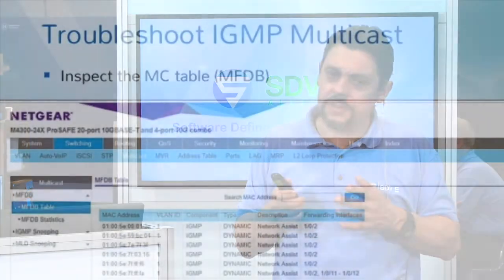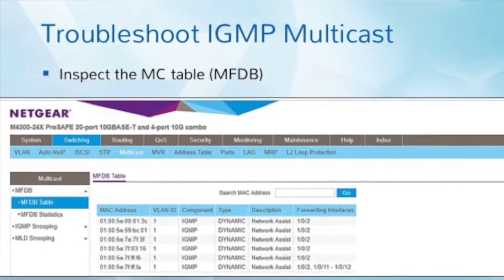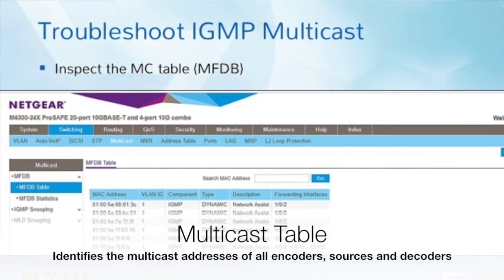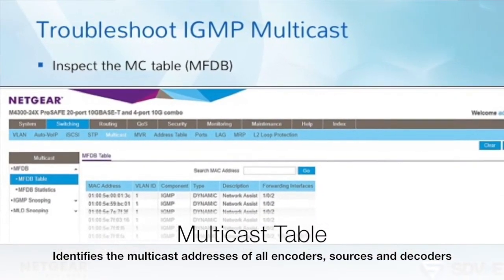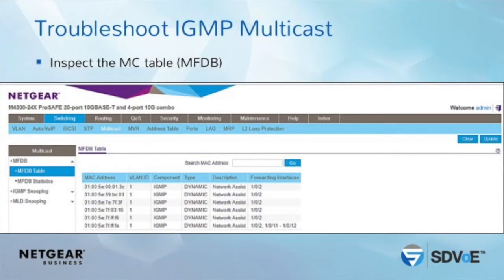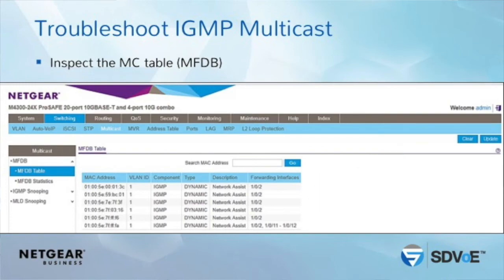What about troubleshooting? If you have issues, there is one place to go: the multicast table. The switch provides this table, and in it you will see your encoders' sources and decoders' destinations based on their multicast addresses. The best way to troubleshoot a multicast installation is to inspect the multicast table. If you don't see your encoders and decoders in there, it means your IGMP system is not working.